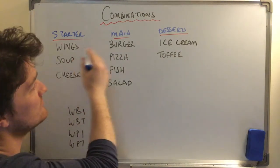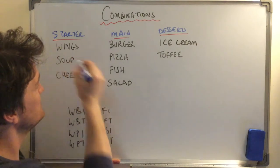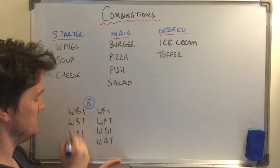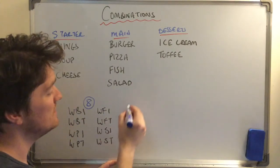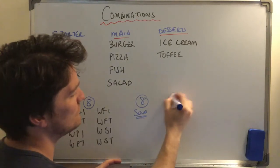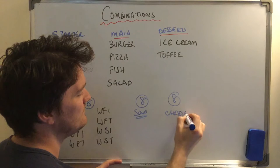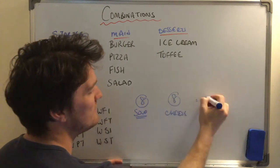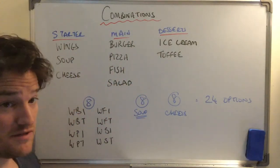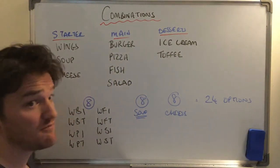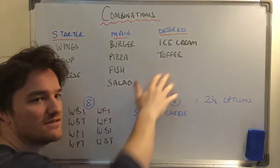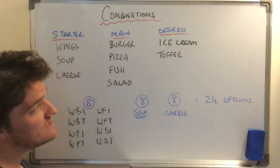Taking wings first, I get eight options. Doing the same with soup gives eight, and cheese gives another eight — so twenty-four total choices in this restaurant. That's quite time-consuming, and what happens when we have bigger choices? What if I had nine starters, twenty mains, and ten desserts? You're not going to write them all out — let's find a shortcut.